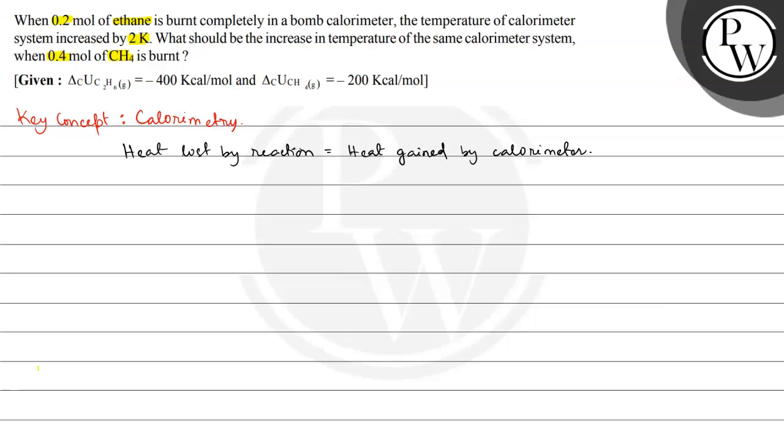Now heat lost by reaction we can separately calculate because we have heat of reaction given. So this is in kilocalorie per mole and we have number of moles of reactants given. So number of moles multiplied by the change in internal energy of combustion, that is the formula for heat lost by reaction.